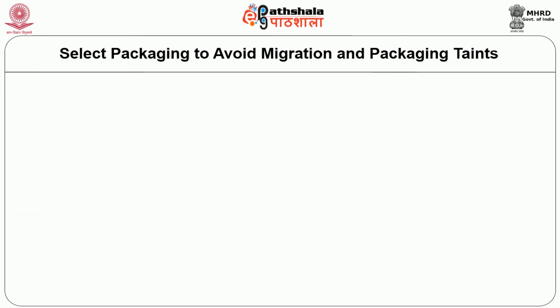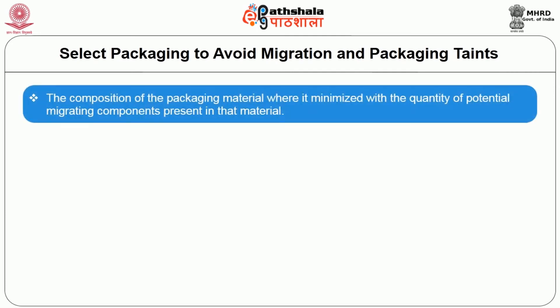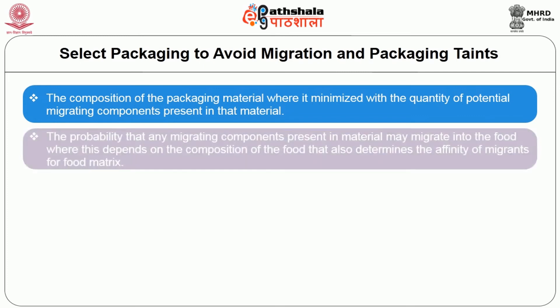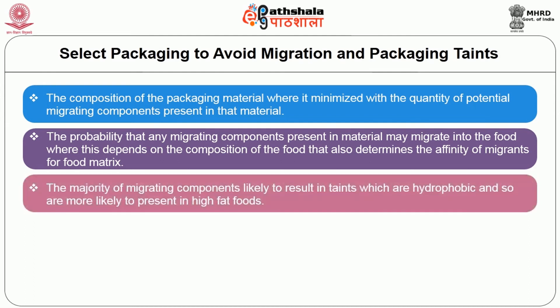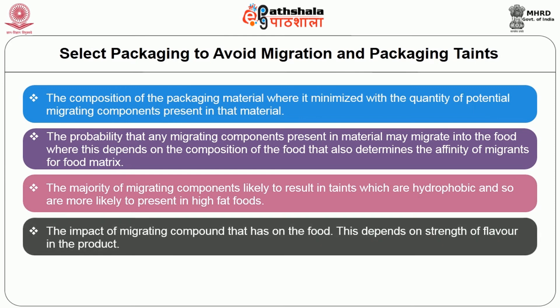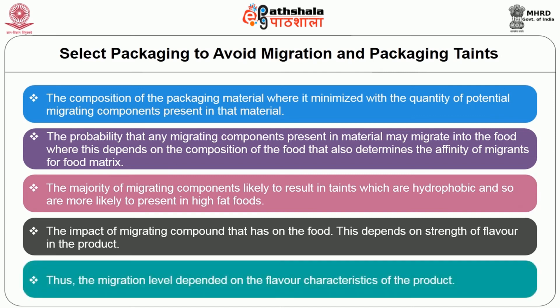The potential for taints will be evaluated by considering the composition of the packaging material, where it minimizes the quantity of the potential migrating components present in the material. The probability that any migrating components may migrate into the food depends on the composition of the food, which also determines the affinity of migrants for the food matrix. The majority of migrating components likely to result in taints are hydrophobic and so are more likely to be present in high-fat foods. The impact of a migrating component on the food depends on the strength of flavor in the product, so the migration level depends on the flavor characteristics of the product.